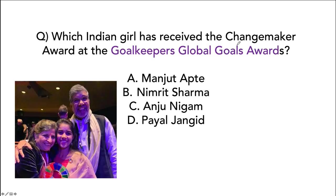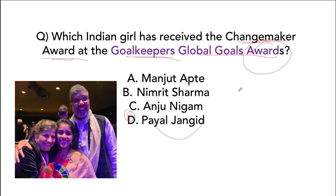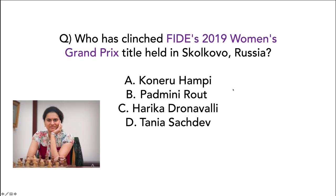Payal Jangid from Rajasthan received the Changemaker Award at the Goalkeepers Global Goals Awards — she has done extensive work to end child labor and child marriages in Rajasthan. Koneru Humpy won the FIDE 2019 Women's Grand Prix title — essentially a chess World Cup for women. She is from Andhra Pradesh.